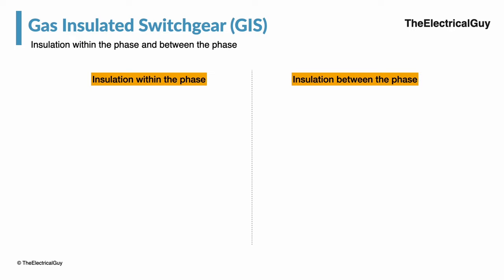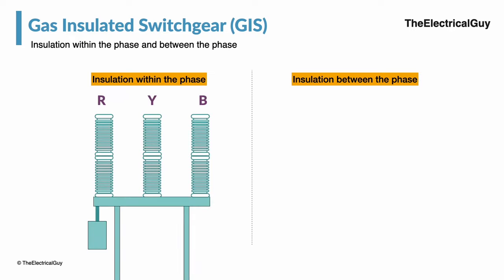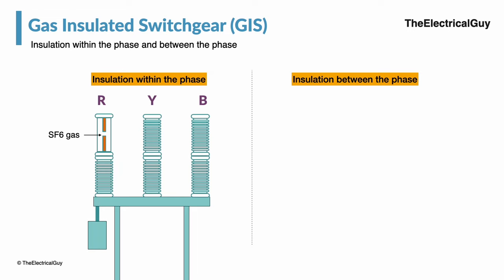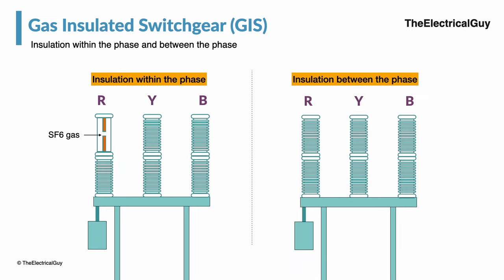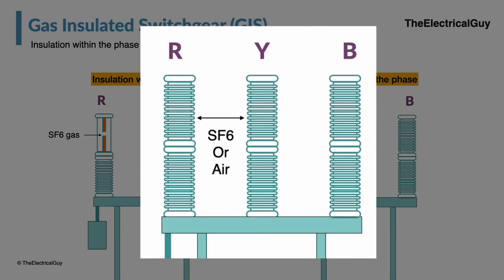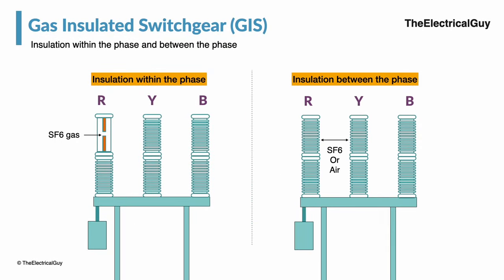Consider the example of a circuit breaker. It has three phases R, Y, and B as shown. The insulation provided in the R phase or any other phase is known as insulation within the phase. Insulation between R and Y phase, or R and B phase, or any other two phases, is called insulation between the phases. In GIS technology, within-phase and between-phase insulation is provided by SF6 gas only.